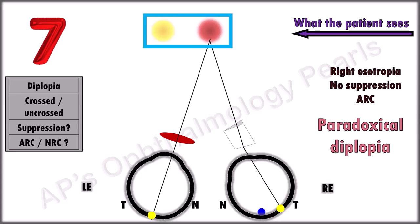The explanation for this is, in ARC, this is the pseudofovea which has the straight-ahead orientation. So, even though the image falls on the true fovea, the visual cortex interprets this as being temporal to the straight-ahead position because of the ARC and so the image is perceived nasally. This occurs either if surgical correction or prism correction is done without correcting the ARC.